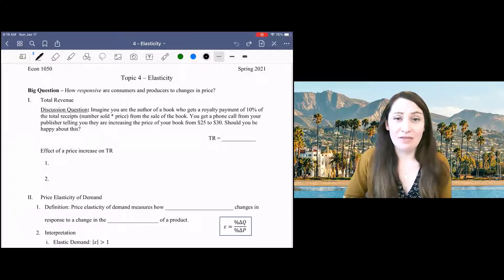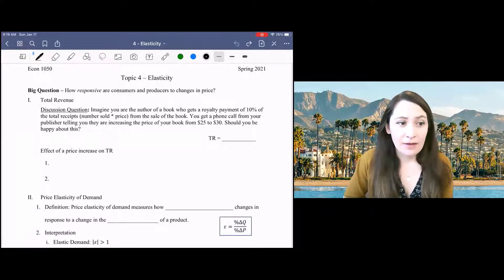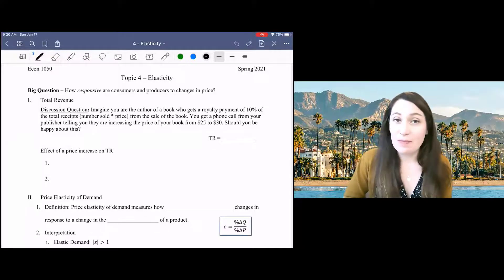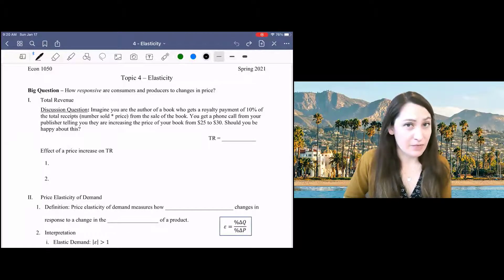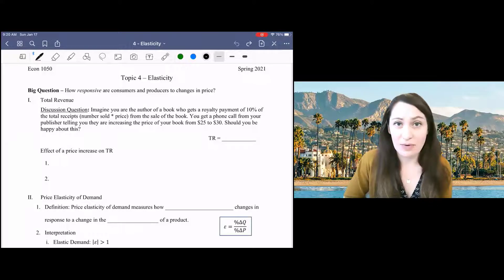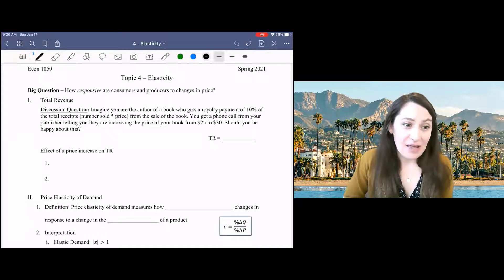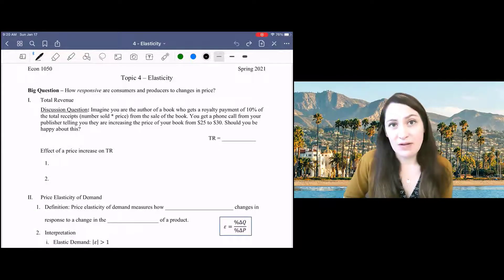To motivate our discussion of elasticity, let's start with a simple example. Imagine you're the author of a book and you get royalty payments based on the revenue from book sales. Your royalty payment is 10% of total revenue. That's the number of books you sell times the price of your book. You get a call from the publisher and they are increasing the price of your book from $25 to $30.